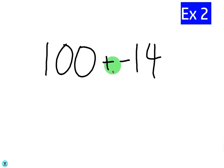Let's say we have 100 plus negative 14. Again, the rule is since you're adding a negative number, this just becomes a negative. So it ends up becoming 100 minus 14.